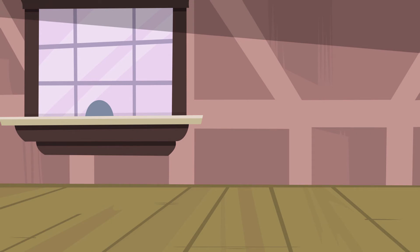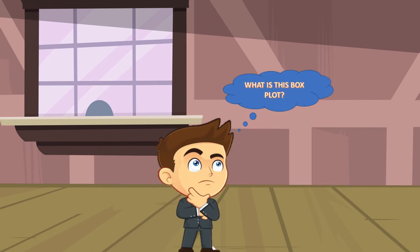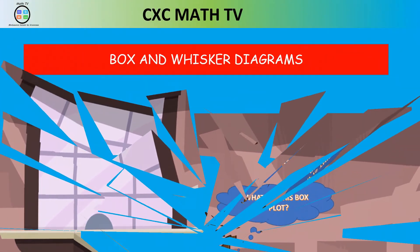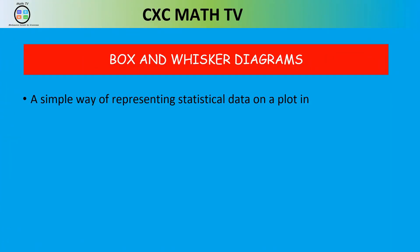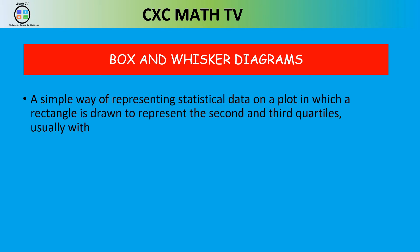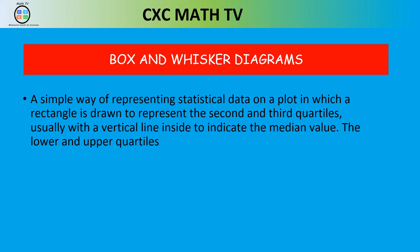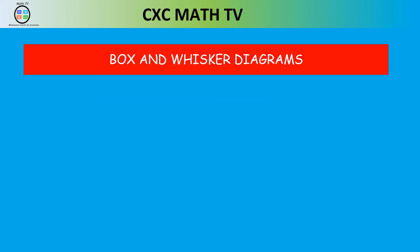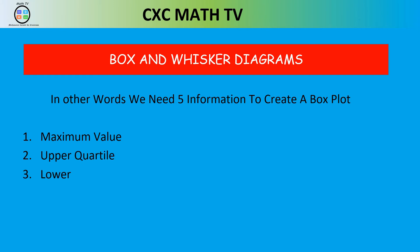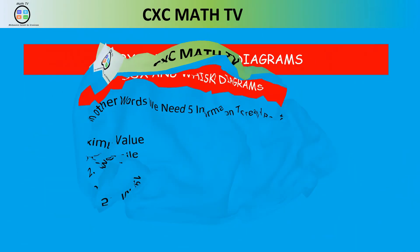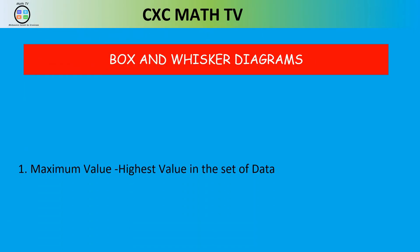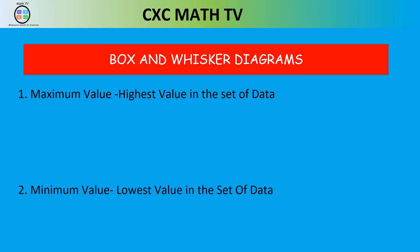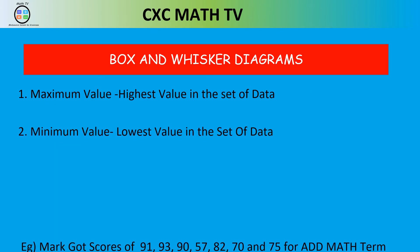Now, what is a box plot? The box plot is a simple way of representing statistical data in a rectangular box. It has five main pieces of information: maximum value, upper quartile, lower quartile, median, and minimum value. The maximum value is the highest value in the data set; the minimum value is the lowest.